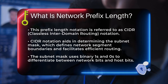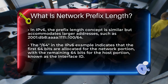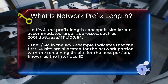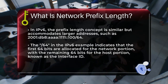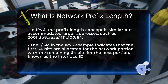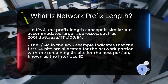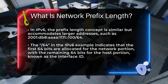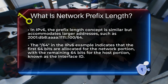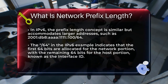For instance, an address like 2001:DB8:AA11::1/64 tells us that the first 64 bits are the network portion, leaving the remaining 64 bits for the host portion, known as the interface ID. The prefix length is not fixed and can vary depending on the needs of the network.